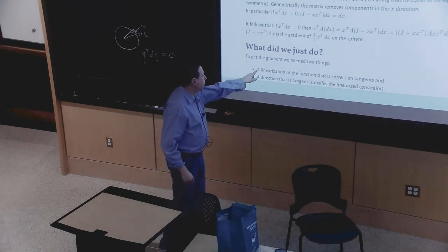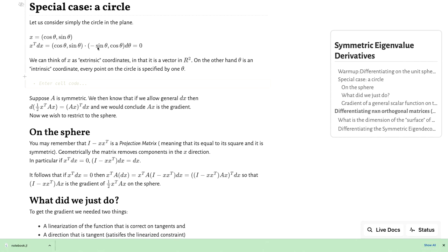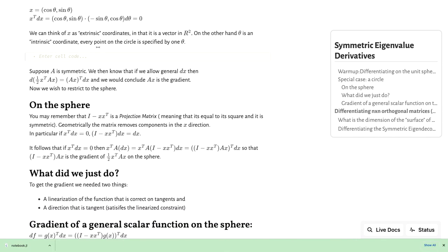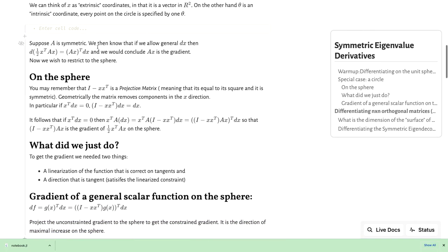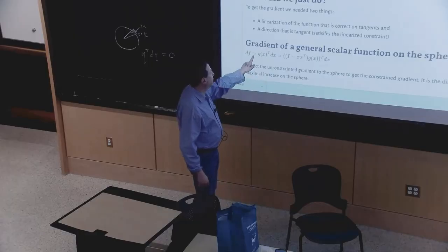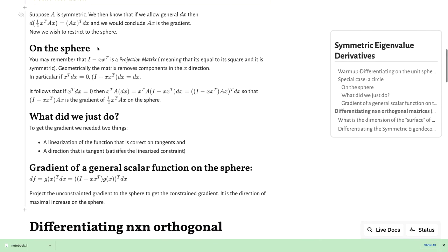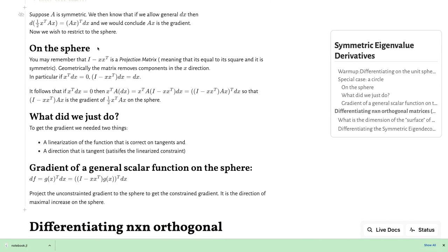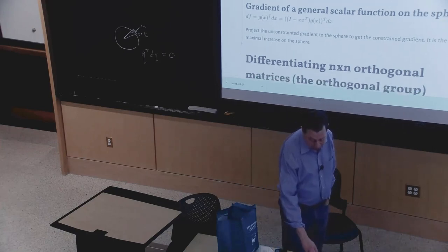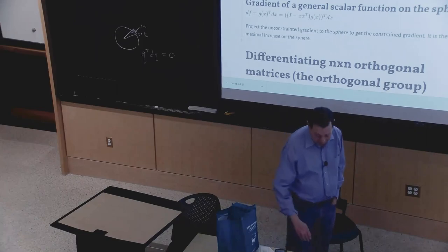What we just did: we needed a linearization of a function that's correct on tangents, and a direction that itself is tangent. In general, if you had some general function on the sphere, you would end up just projecting the original gradient so that it's in the tangent space. Let me get to the more fun part: let's go to real matrices and differentiate orthogonal matrices.